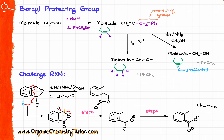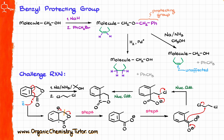So now if I bring in my dichloroethane, step number one here is going to be a simple nucleophilic substitution — a simple SN2 reaction — looking like this, giving me the following intermediate after my nucleophilic attack. And then from there we are going to close up our ring through the second SN2 reaction, giving us our final product. Pretty cool, right?